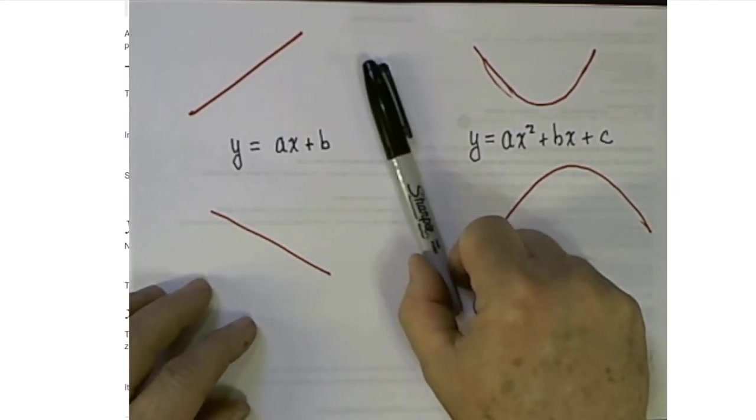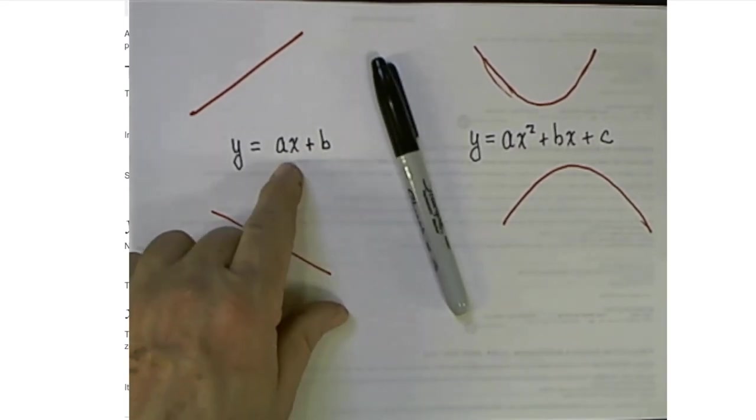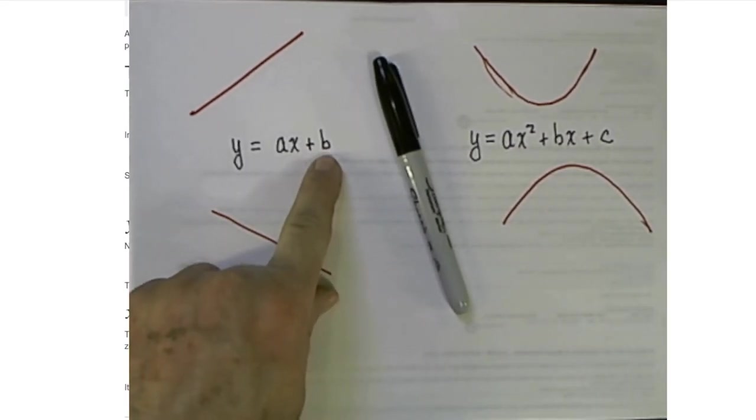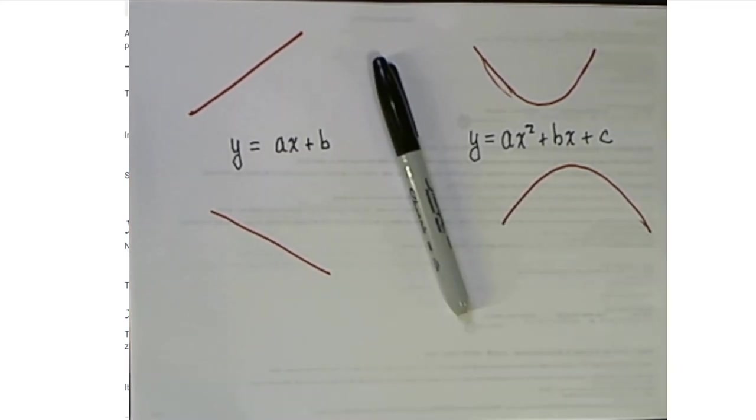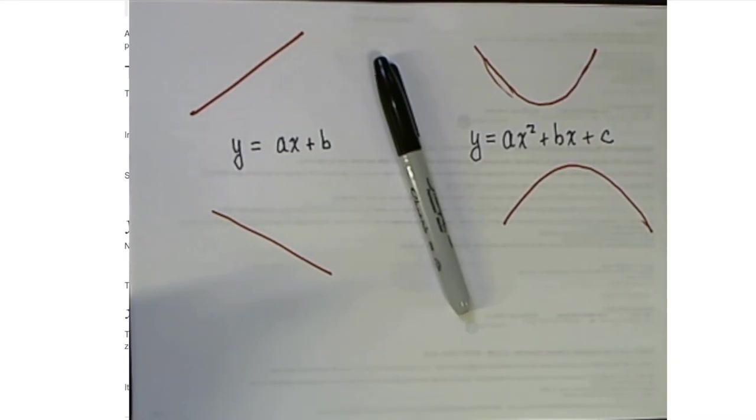Notice another similarity in these two. In a straight line, this constant coefficient b tells where the y-intercept is. In this equation and in this function, the constant c tells us where the y-intercept is on the parabola.